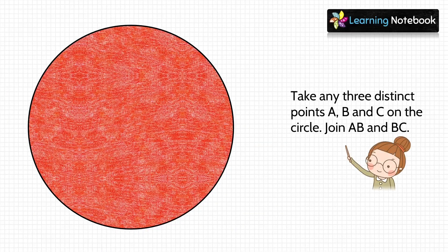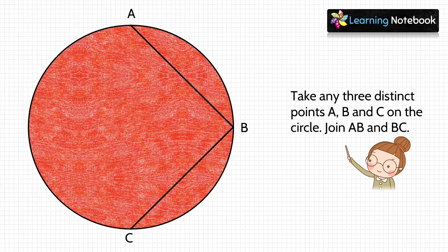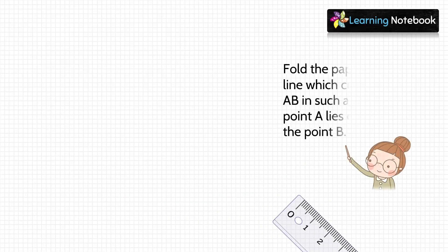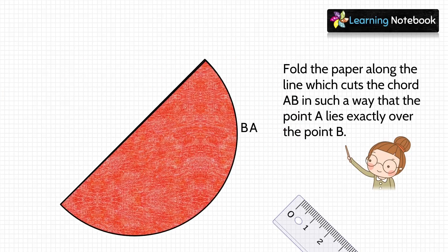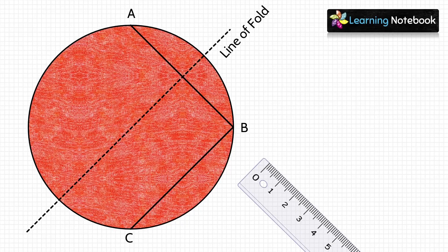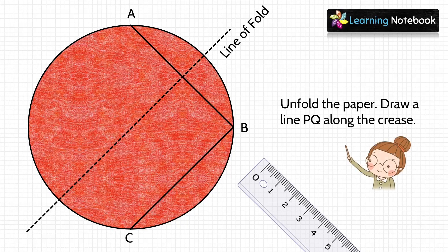Take any three distinct points A, B, and C on this circle and join AB and BC. Now fold this circle so that point A lies exactly over point B. Unfold the sheet — this dotted line is the line of fold. Draw a line PQ along the crease.